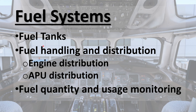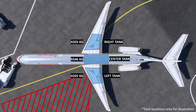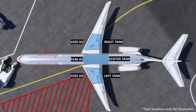Here is a top view of the MD-82. This aircraft has three fuel tanks: the left main tank, the right main tank, and the center tank. The locations shown are just for illustration. Both the left and right tanks have a capacity of 4,205 kg each, and the center tank has 9,346 kg of capacity. These numbers come directly from the Mad Dog X load manager included with Leonardo's MD-82.